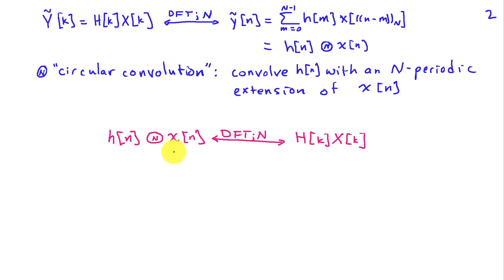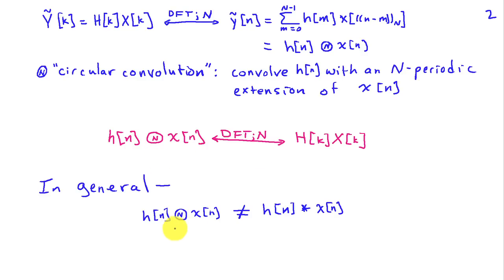Our property for the DFT with respect to convolution and multiplication is that we do have a convolution that converts, through the DFT, to multiplication of coefficients. However, it's a slightly different convolution than we've worked with in the past. In general, this N-periodic or circular convolution is not going to be the same as the ordinary convolution of h and x, and that's a fact we're going to explore in more detail.